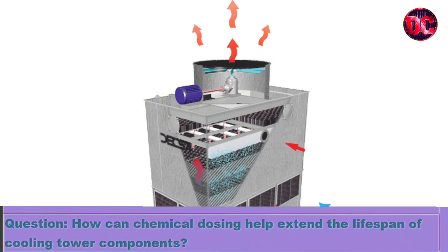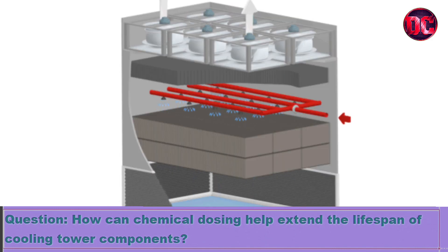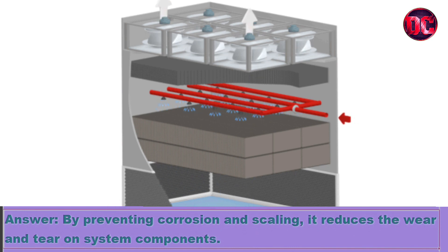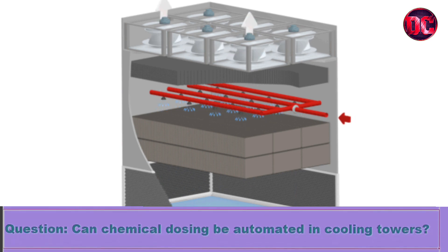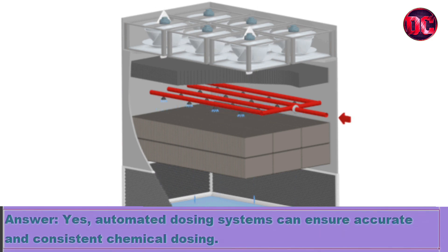Question: How can chemical dosing help extend the lifespan of cooling tower components? Answer: By preventing corrosion and scaling, it reduces the wear and tear on system components. Question: Can chemical dosing be automated in cooling towers? Answer: Yes, automated dosing systems can ensure accurate and consistent chemical dosing.